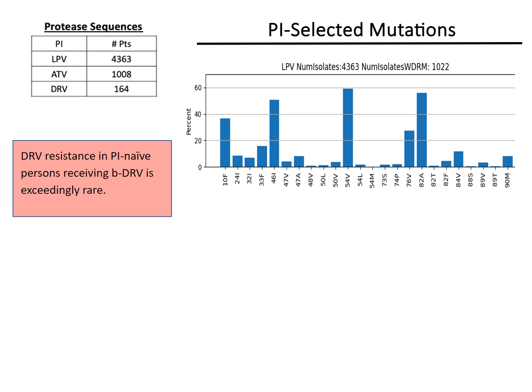The figure at the upper right shows the drug-resistance mutations selected in patients who received boosted lopinavir. M46I, I54V, and V82A are the most commonly selected lopinavir-resistance mutations.